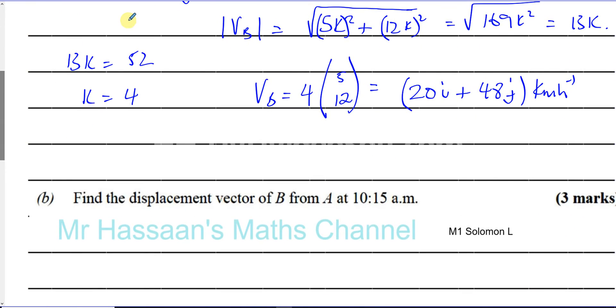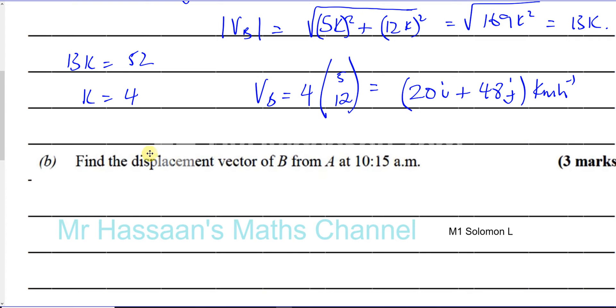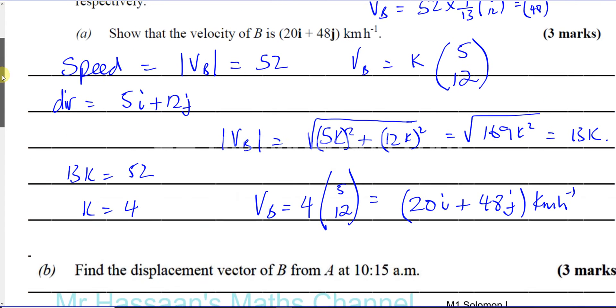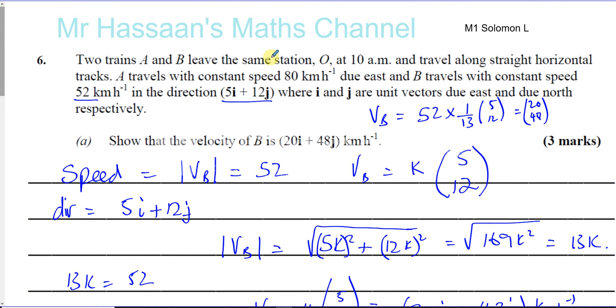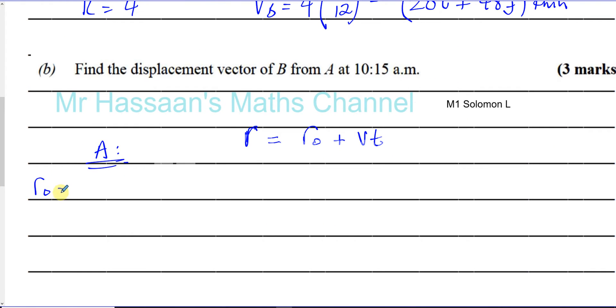For part B, we're told to find the displacement vector of B from A at 10:15 a.m. So the displacement vector, R, is given by R0 plus V times T, where V is the velocity vector, and R0 is the position vector of the point at time equals 0. So in this case, let's take A. We're told about A and B, both of them, that they start at the same time from O. So we can say that (0, 0) is our initial position for both of them. So R0 is (0, 0) for A, and also for B. Put the information for B here. R0 is also (0, 0).